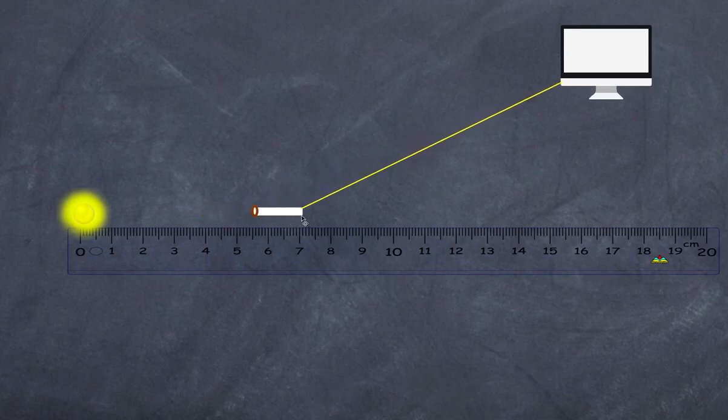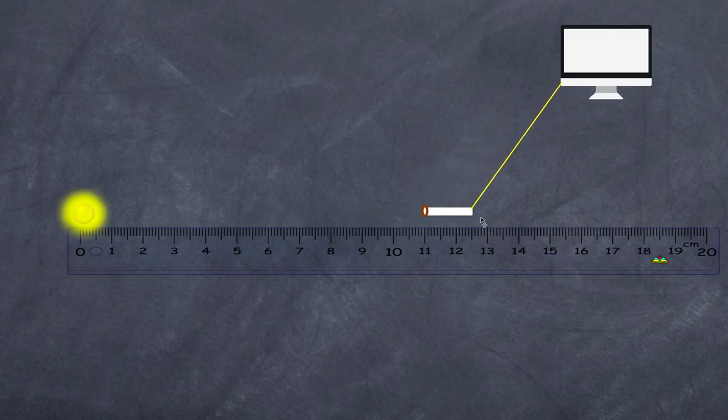You continue the process at measuring at set intervals. So let's say at 4, 6, 8, 10, 12 and 14cm. And you record the values of the intensity for each of those distances.